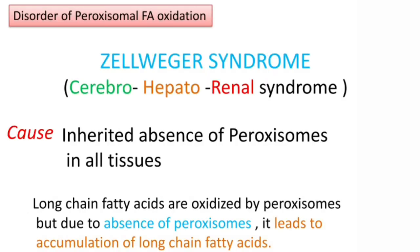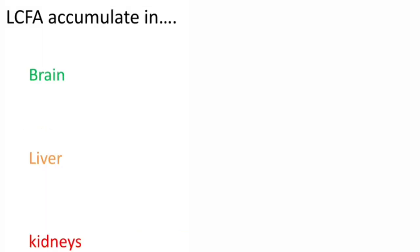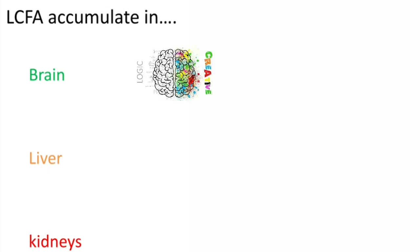Coming to another disorder, Zellweger syndrome, which is a disorder of peroxisomal fatty acid oxidation. It is also called cerebro-hepato-renal syndrome. The cause for this condition is due to absence of peroxisomes in all tissues. Normally, long chain fatty acids are oxidized by peroxisomes, but due to their absence, it leads to accumulation of long chain fatty acids in the brain, liver, and kidneys.